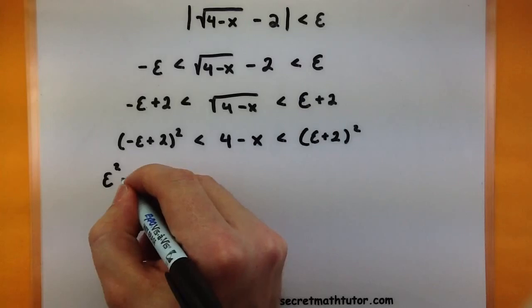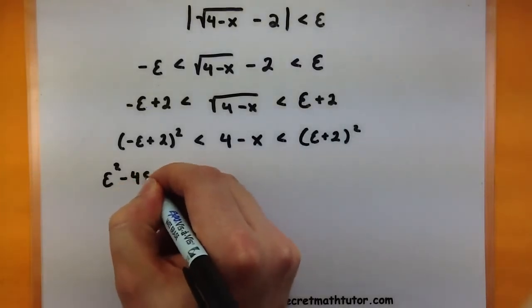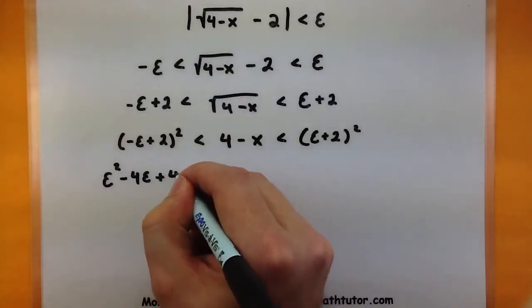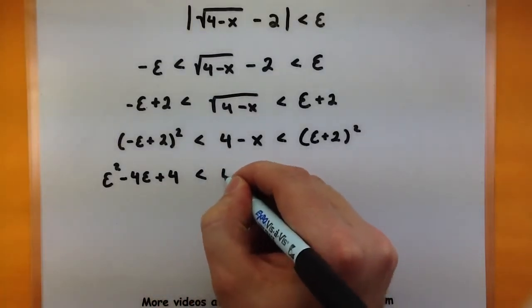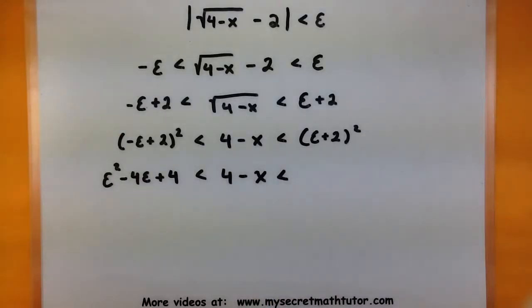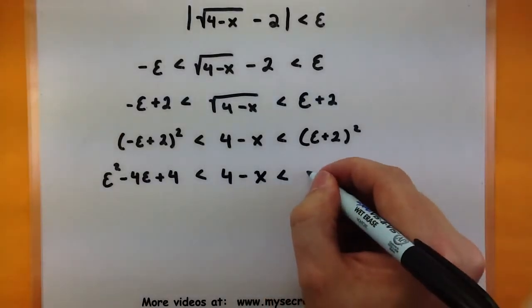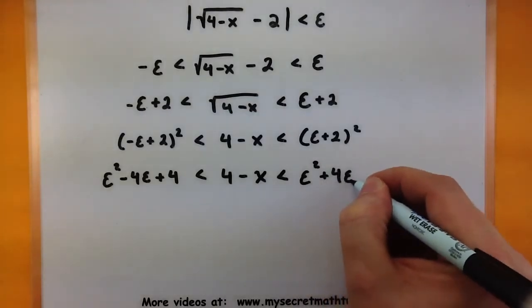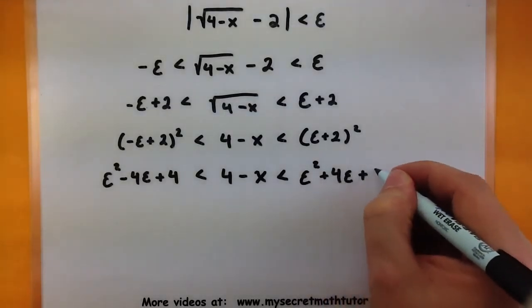Outside and inside terms would give me a minus 4 epsilon. And my last terms would be a plus 4. Doing my other guy, epsilon squared plus 4 epsilon plus 4.